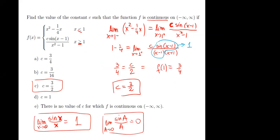Same concept for another piecewise function. On the right-hand side we use the additional property: sine of a quantity over the same quantity equals one when the quantity approaches zero. Since x goes to one, (x minus one) goes to zero, so sine of zero over zero equals one. This is an additional concept layered on top of continuity.